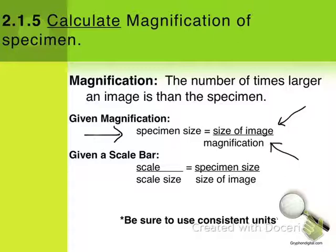And then lastly here we see magnification, and magnification is of course the number of times larger the image is than the actual specimen. Okay, so this is when we are finding magnification.